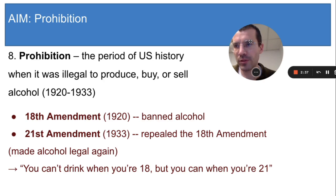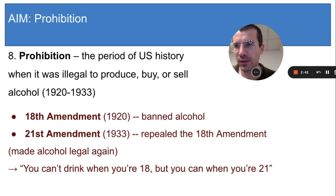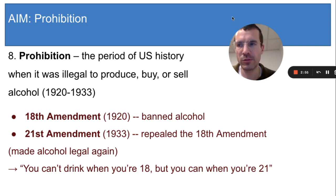After 13 years, Americans decided that prohibition had been a mistake and they allowed alcohol again. The main reason that prohibition didn't last was that there wasn't much interest in enforcing it, and as a result, lots of Americans broke the law and continued to drink. There was a lot of drinking in the 1920s.